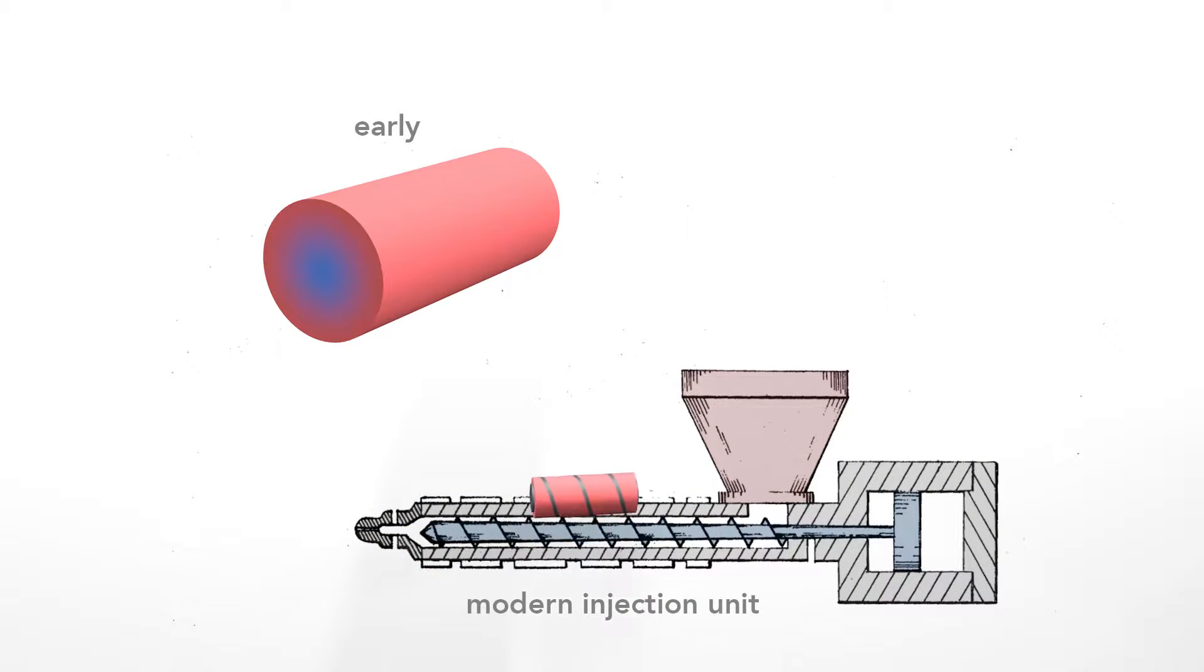First, in modern units, the plastic fills only the space around the shaft of the screw. This eliminates the cooler central region, leaving a thinner, evenly heated layer of plastic.